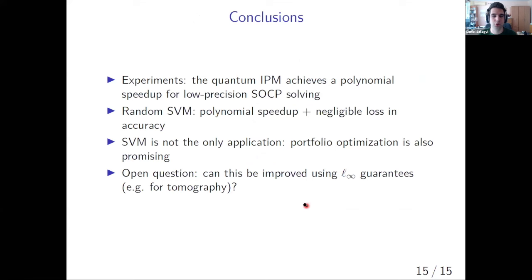So to conclude, this shows that our quantum algorithm actually achieves a polynomial speedup for solving some low precision SOCPs. In particular, we consider the case of SVMs, where we observe a polynomial speedup and a negligible loss in accuracy. It's worth noting that SVMs are not the only application. We have applied this approach to solving constraint portfolio optimization problems, which can also be reduced to SOCPs, and we also observe some polynomial speedup there. Maybe one open question is whether we can improve upon this by using more advanced quantum linear algorithms, such as L infinity tomography for our vectors. So yeah, that would be it. Thank you very much for tuning in.